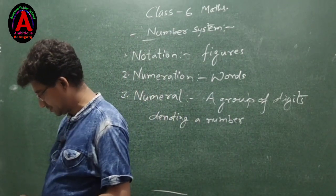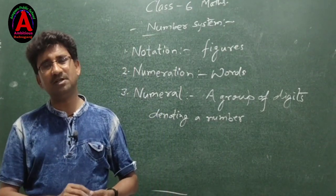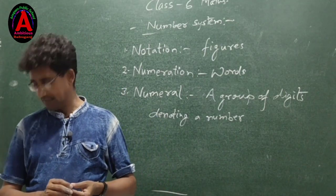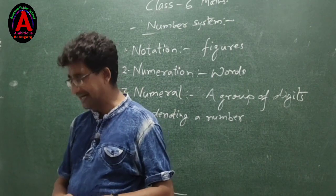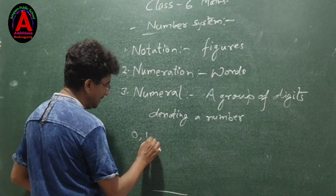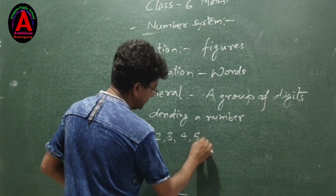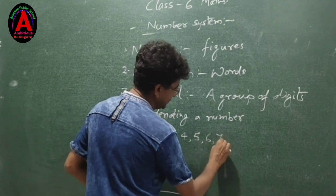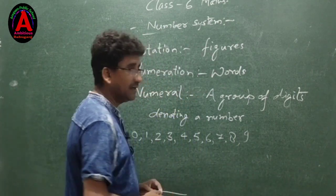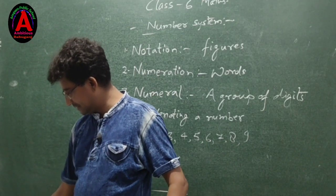In the Hindu-Arabic system of writing numbers, there are 10 symbols: 0, 1, 2, 3, 4, 5, 6, 7, 8, and 9. These are the Hindu-Arabic system of writing numbers.